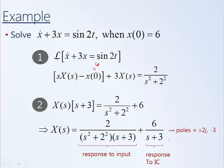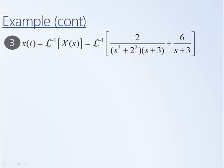Furthermore, we can look at the poles of the system in order to better understand or predict the resulting time-based function. Recall that poles are solutions that make the denominator equal to zero. If we got a common denominator, we would have s squared plus 2 squared and a quantity s plus 3 in the denominator, giving us poles of minus 3 and plus or minus 2j. The negative 3 is the root of the characteristic equation — it represents the natural response of the system, the homogeneous solution. These complex poles represent the particular solution; they are due to the forcing input from the sine wave. The third step is to take the inverse Laplace transform to find the time-based function x of t.